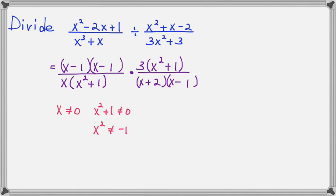So x squared plus 1 cannot equal 0, that means x squared cannot equal negative 1. But if you think about it, x squared couldn't equal negative 1 anyway, right? Because when you square a number, it comes out positive.